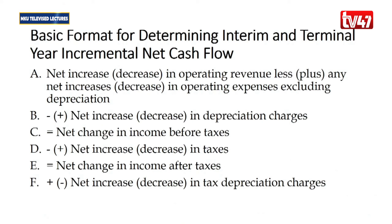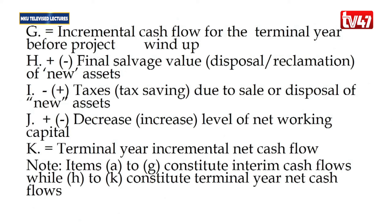The basic format for the interim and terminal incremental net cash flows begins with the net increase or decrease in operating revenue, less any net increase or decrease in operating expenses excluding depreciation, plus the increase or decrease in depreciation charges — giving us the net change in income before taxes. We then add or subtract the increase or decrease in taxes to get the net change in income after taxes, then add or subtract the net increase or decrease in depreciation charges to get the incremental cash flow for the terminal year before the project winds up.